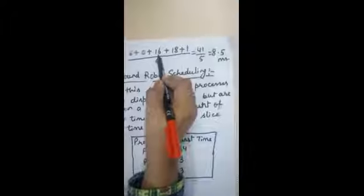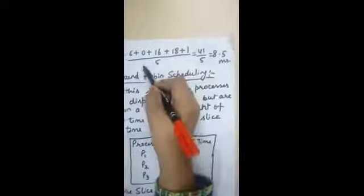At last, we calculate the average waiting time. P2's waiting time is 0, P5's waiting time is 1, P1's is 6, P3's is 16, and P4's is 18. Average waiting time = (P1 + P2 + P3 + P4 + P5) divided by 5, i.e., (6 + 0 + 16 + 18 + 1) divided by 5 equals 8.5 milliseconds.